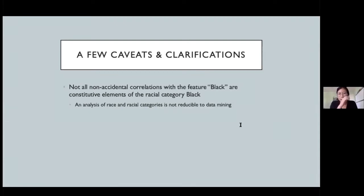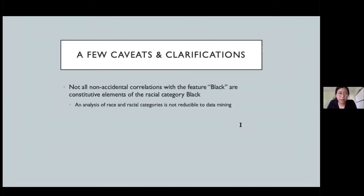A few caveats before I get to the upshot. First, a thick constructivist account doesn't need to take all non-accidental correlations with the feature 'black' to be constitutive of the racial category. I think most causal effects of being labeled black and encountering the world as black are not defining features of the category. The question of which ones are essential and which aren't is an important conceptual and political question that isn't reducible to data mining.